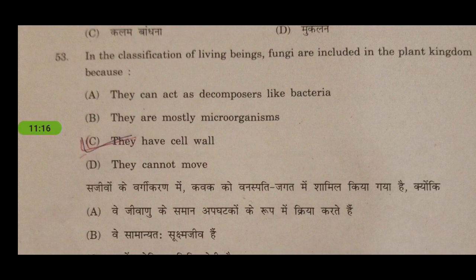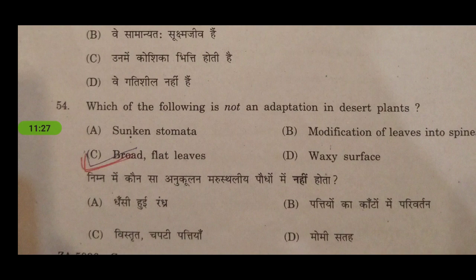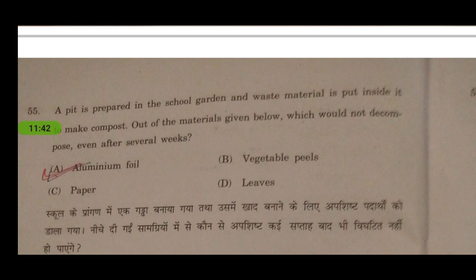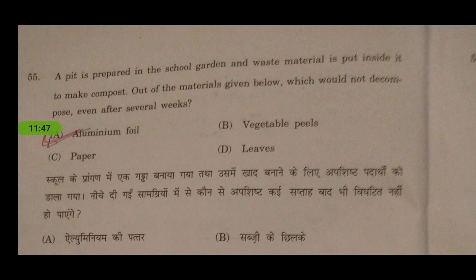In the classification of living beings, fungi are included in the plant kingdom because they have a cell wall. Which of the following is not an adaptation in desert plants? Broad and flat leaves will not help desert plants in reducing water loss — this answer appears in other papers too. Next: a pit is prepared in the school garden and waste material is put inside to make compost. Which material would not decompose even after several weeks? The answer is aluminum foil, as it is non-decomposable.